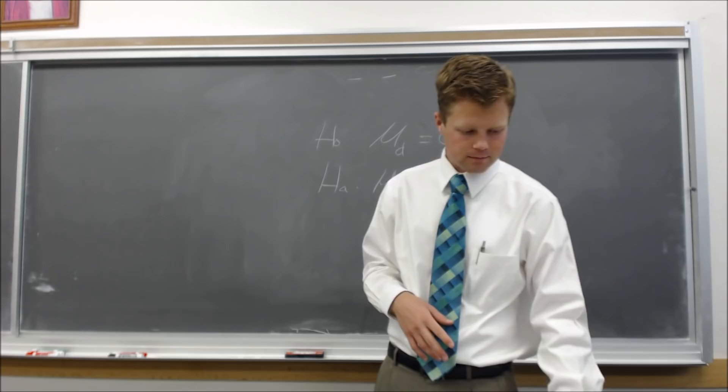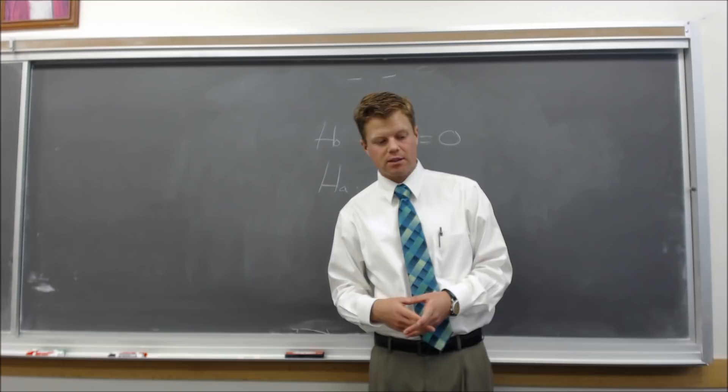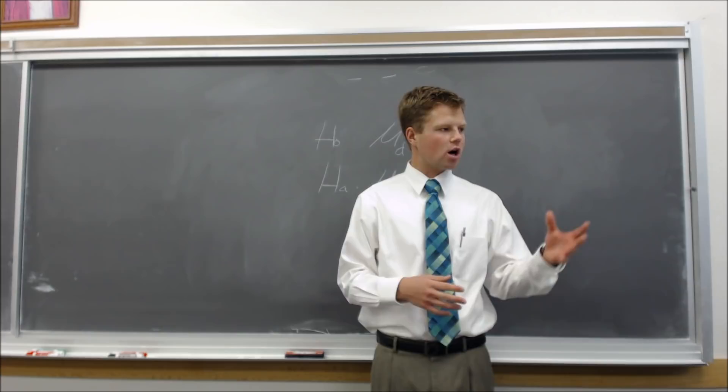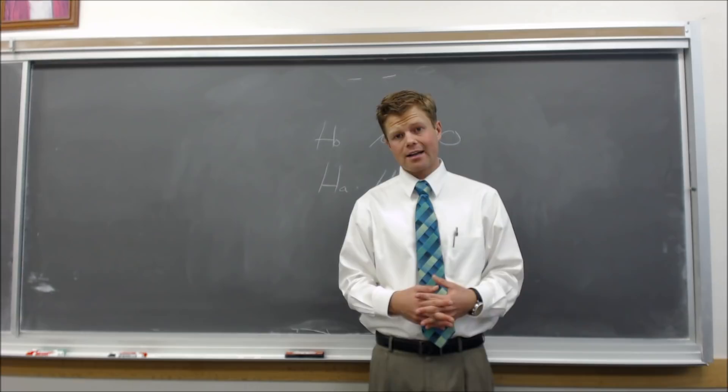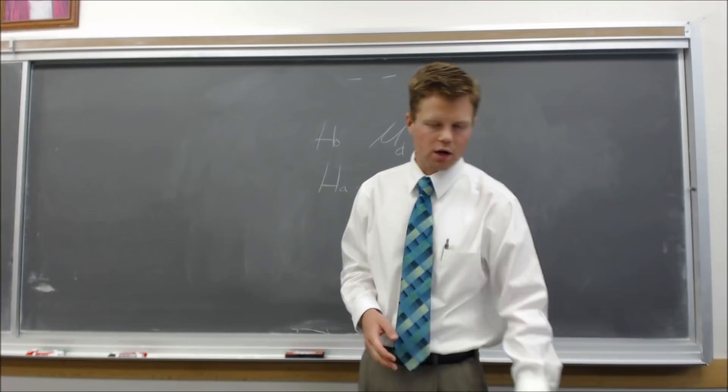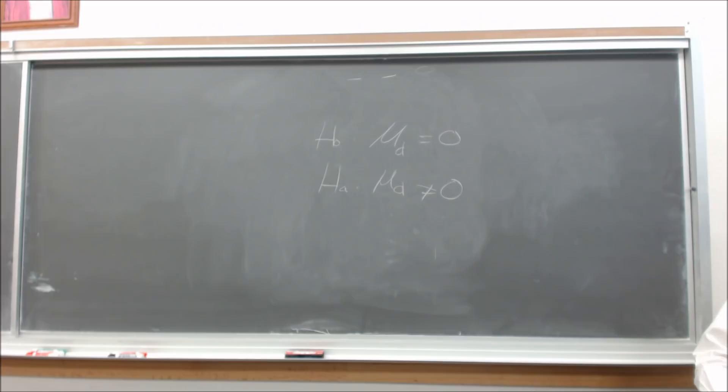Part C: Compute the differences between the two times and determine if the requirements are met. We take our differences using Excel. There are only 9 or 10 pieces of data, so we're not large enough to use the central limit theorem, and we need to do a QQ plot. For a QQ plot, we can copy the differences, go to descriptive statistics, and find the QQ plot at the bottom.